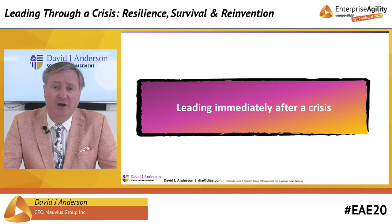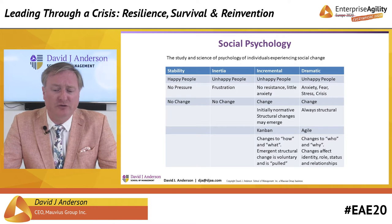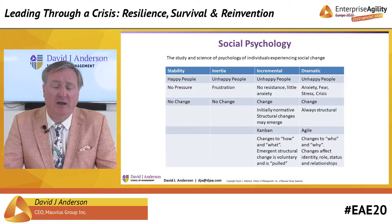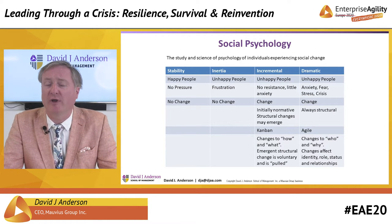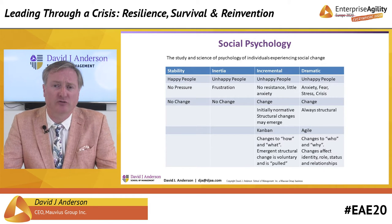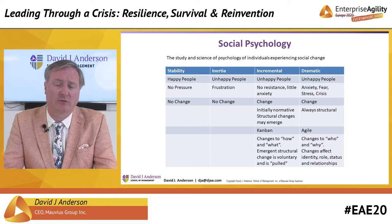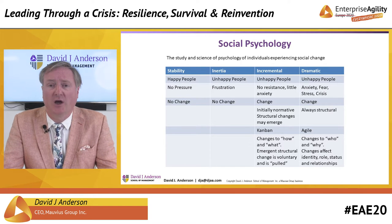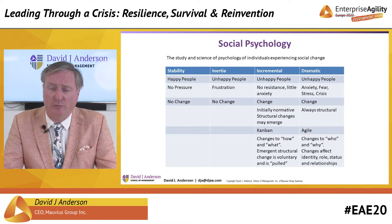Firstly, leading immediately after a crisis — what do you do? Social psychology divides the world of change into four categories. Stability: everyone's happy and there's no pressure for change, so no change happens. Inertia: people are unhappy but there isn't sufficient pressure for change, so no change happens. Incremental, which essentially means evolutionary change, mostly to normative changes — the how and the what we do — not structural changes to our social relationships, groups, status, or the way we're valued.